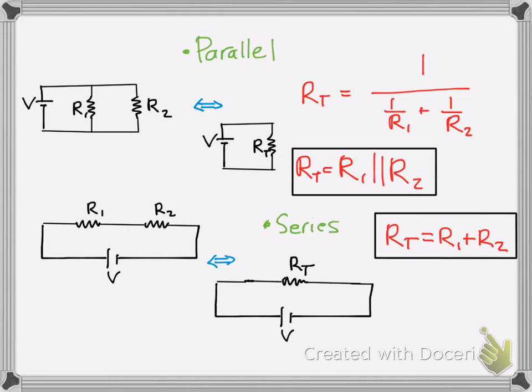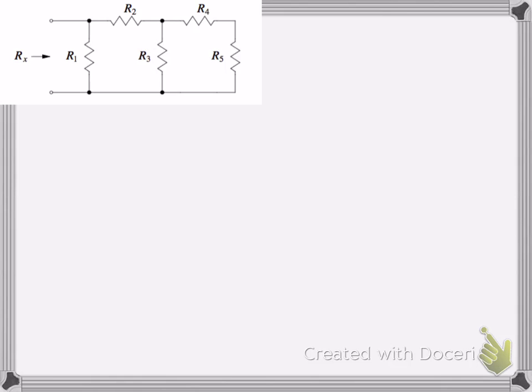Now, with that standard knowledge, which you should know kind of going into these types of problems, here's how we can approach it using that shorthand notation. Any circuit can be reduced into one single resistor and the rest of the battery and whatever else is included. What we're going to do is we're going to go from right to left, and we're going to break the circuit down into a single total resistor.